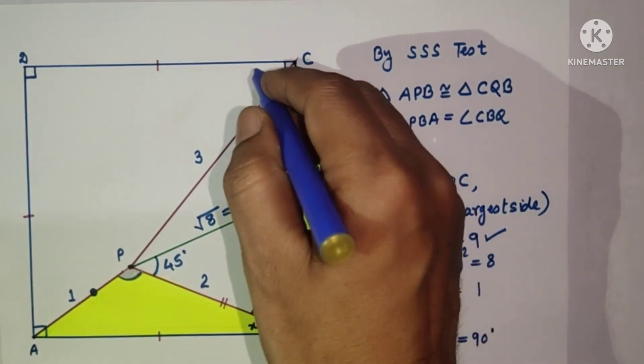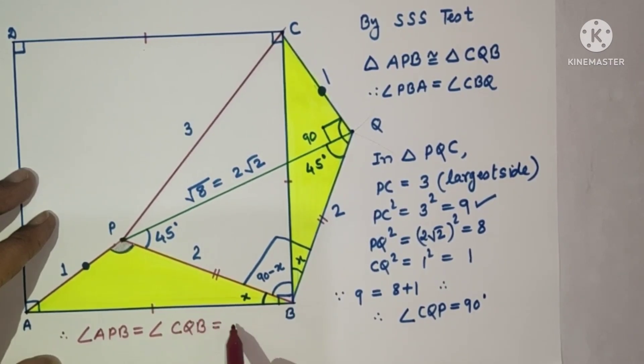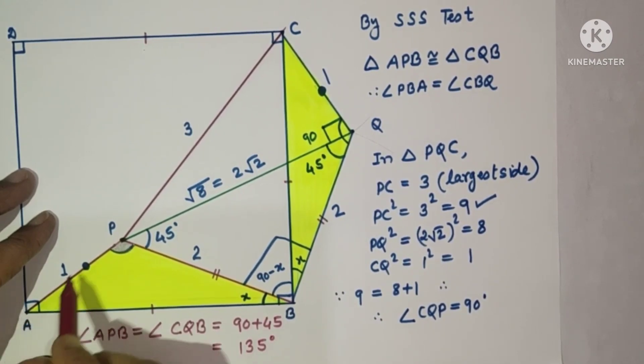So angle CQB equals angle APB. Therefore, angle APB is equal to angle CQB, is equal to 90 plus 45, which is equal to 135. So therefore, angle APB is equal to 135 degrees, which is the answer. Thank you.